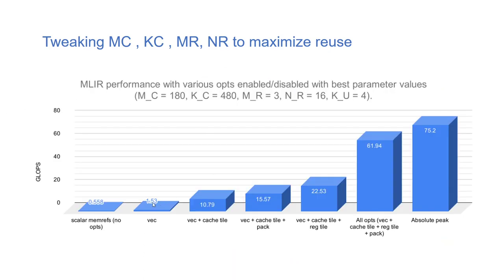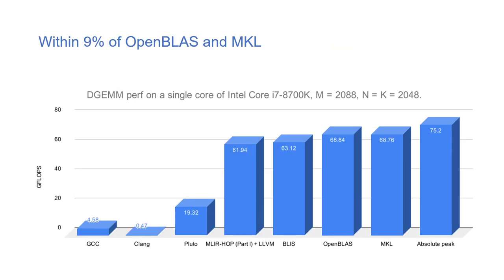In this graph, we can see graphically the progressive increase in throughput of the matrix multiplication algorithm as transformations are added: starting with naive, then cache tiling, then cache tiling and packing, then cache and register tiling, and eventually all optimizations — reaching about 9% away from the hand-optimized implementations, though still some distance from the absolute peak. Comparing to the others, the purely MLIR-optimized version is 9% away from OpenBLAS and Intel MKL.